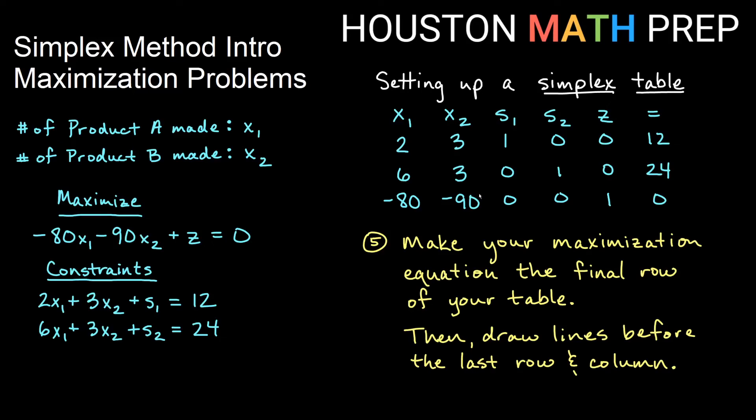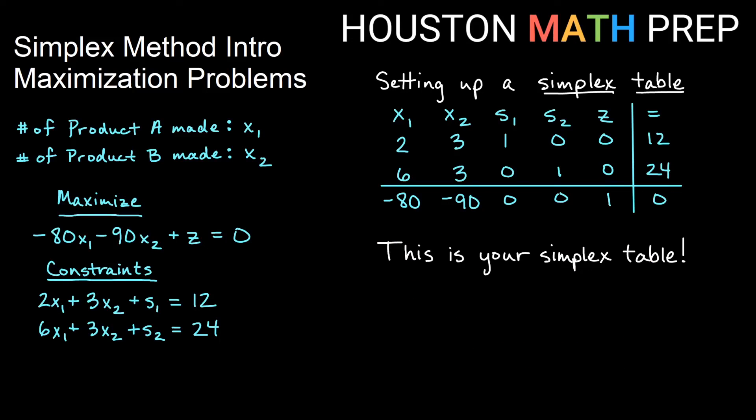Once we've put our constraints and then we have put in our maximization equation as our final row, we're going to go ahead and draw lines before the last row and the last column to sort of section those parts of the table off. We're going to use those as sort of guides as we proceed and learn how to do this with the table in the future. And that's our simplex table. So that's as far as we're going to go in this video. In the next video, we're going to tell you how to find a pivot in the table, and then you will learn how to use the pivot later on to reduce your table to get your actual maximum for this problem. All right, we'll see you in the next one.